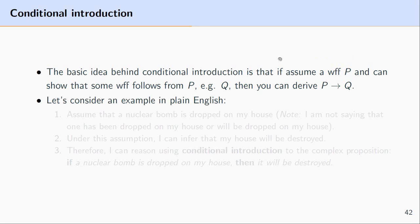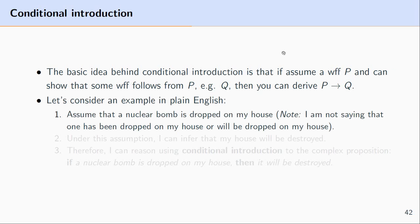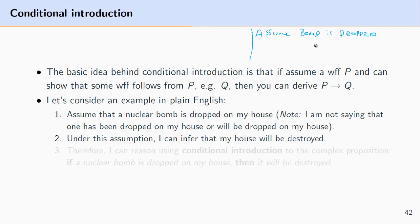Let's consider an example in plain English. Let's assume that a nuclear bomb is dropped on my house — we're not saying that it is the case, we're just supposing it. From this assumption, using the derivation rules as well as other formulas in the proof, if the bomb is dropped then my house will be destroyed. So I assume this particular bomb is dropped, and in conjunction with the formulas in the proof I can show that my house will be destroyed.